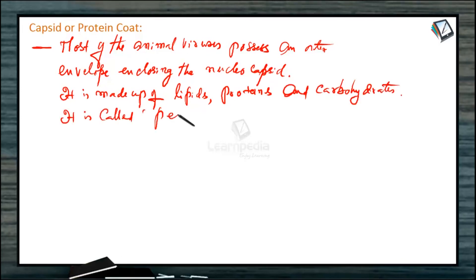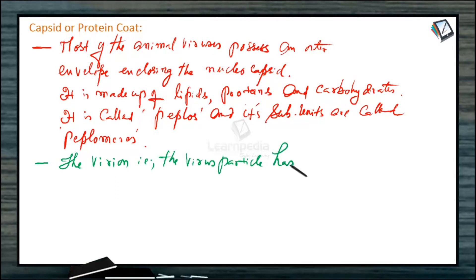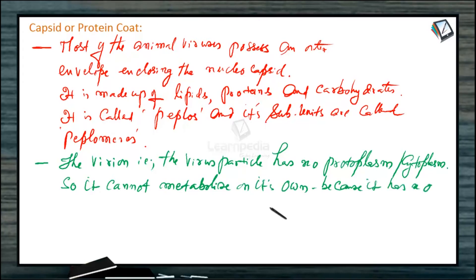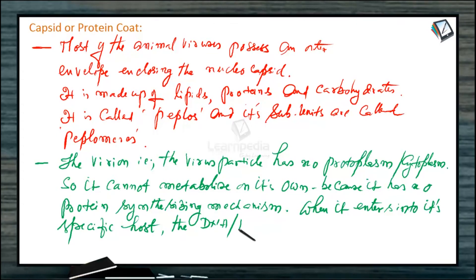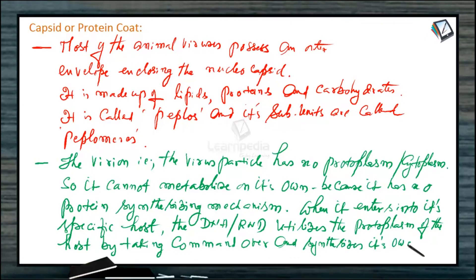The virion, that is the virus particle, has no protoplasm or cytoplasm. So it cannot metabolize on its own because it has no protein synthesizing mechanism. That is why when it is outside a host it is an inert chemical. When it enters into its specific host, the DNA or RNA utilizes the protoplasm of the host by taking command over and synthesizes its own proteins.